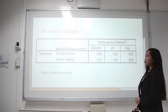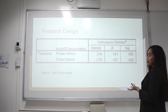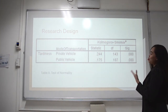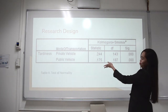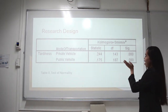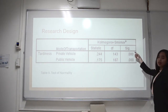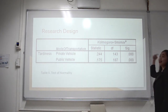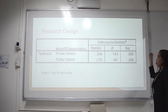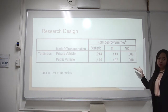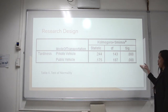We wanted to test the normality of both private vehicle and public vehicle. Our assumption shows that, based on the insignificant value of .00, we concluded that the test of normality is not normally distributed. Our assumption is not normally distributed.